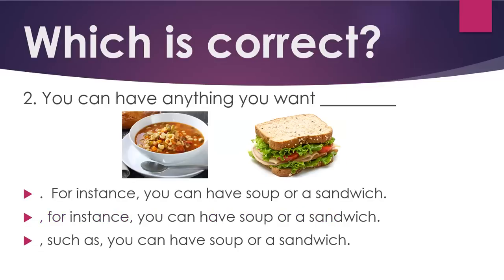Number two: You can have anything you want. Period — for instance, you can have soup or a sandwich. Comma — for instance, you can have soup or a sandwich. Such as — you can have soup or a sandwich.